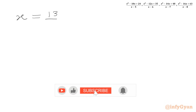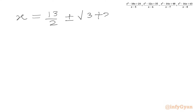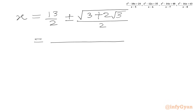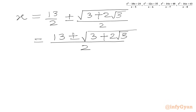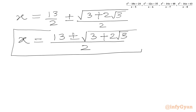We get x = 13/2 ± √(3 + 2√3) / 2, or with a common denominator: x = (13 ± √(3 + 2√3)) / 2. This gives us two real solutions — one with the plus sign and one with the minus sign. I hope friends you will like this video. Thank you so very much for watching. Do not forget to like, share, and subscribe. Bye bye, good luck, take care!